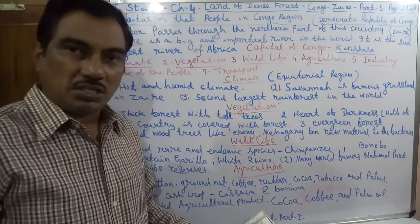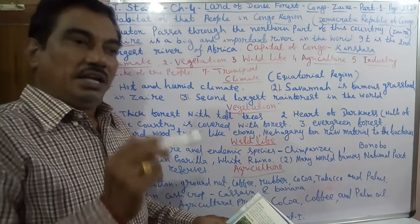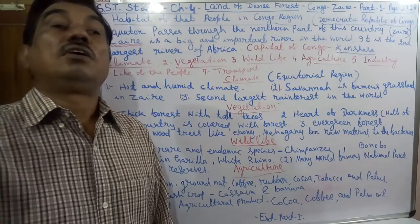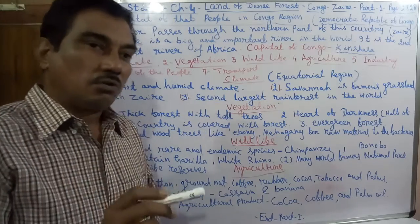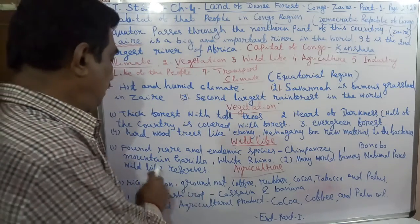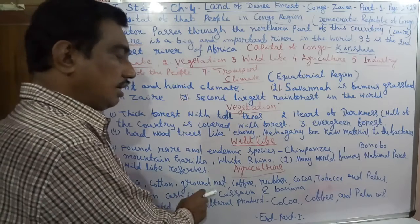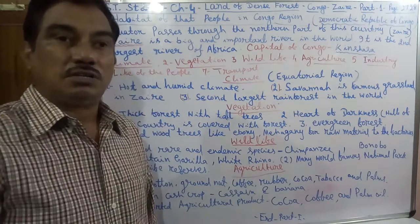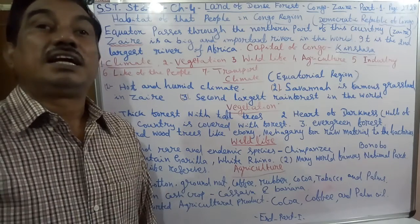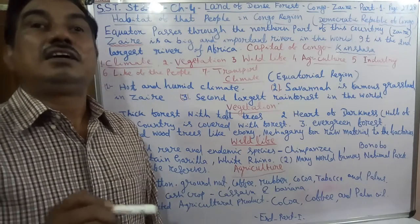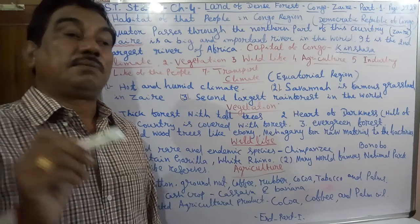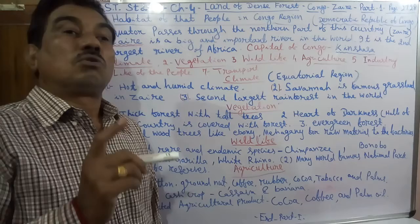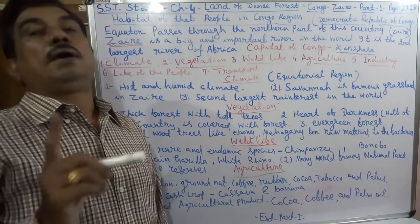In agriculture, crops like rice, cotton, groundnut, coffee, rubber, cocoa, tobacco, and palm are grown here. The main staple crops are cassava and banana. The exported agricultural products are cocoa, coffee, and palm.